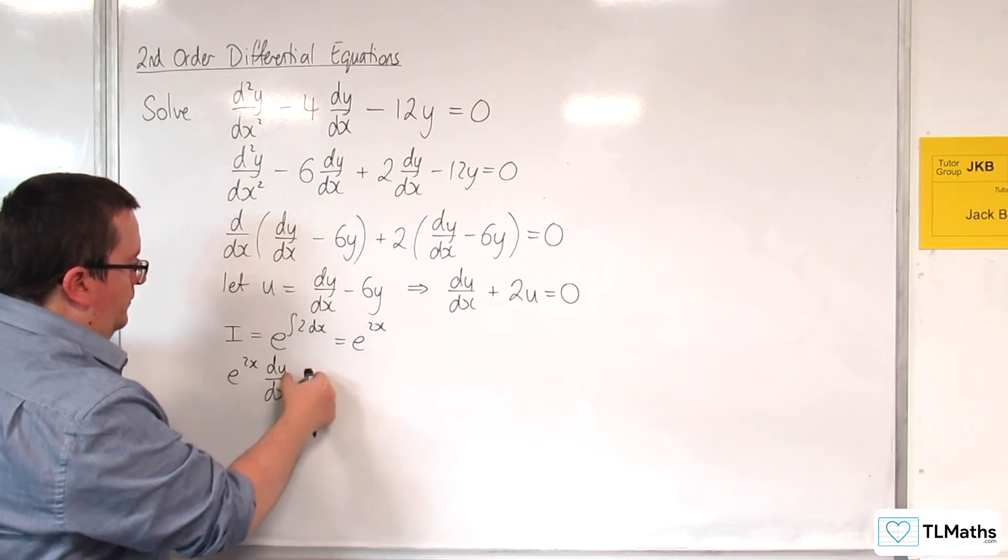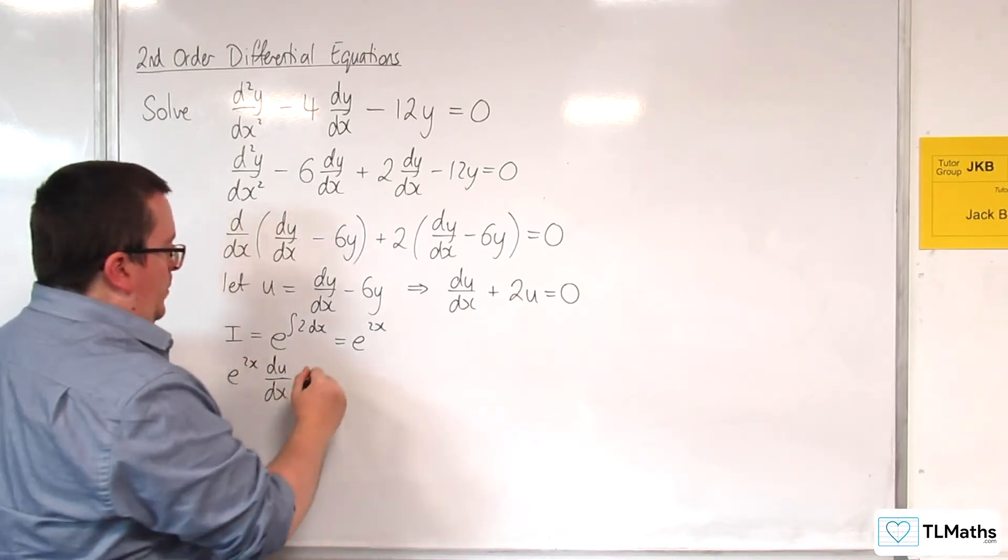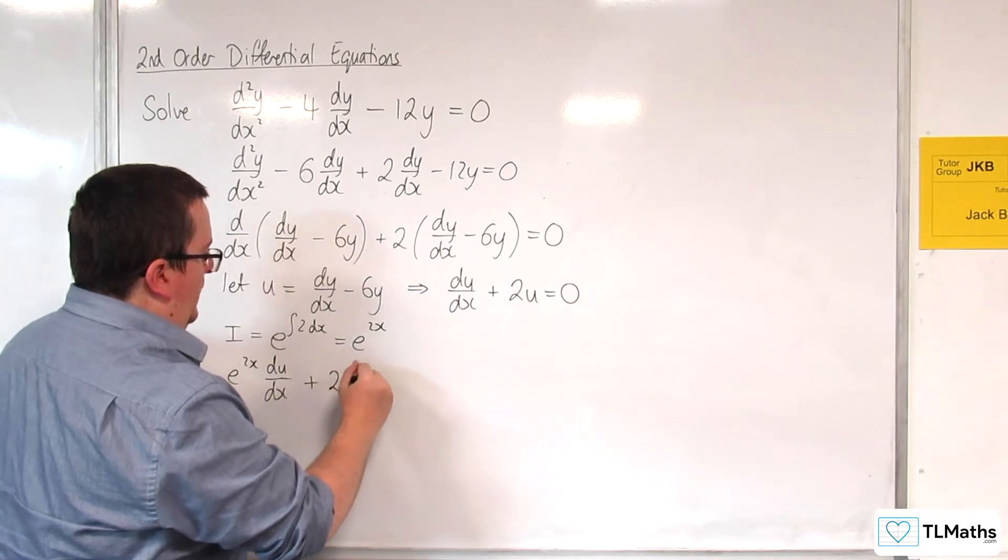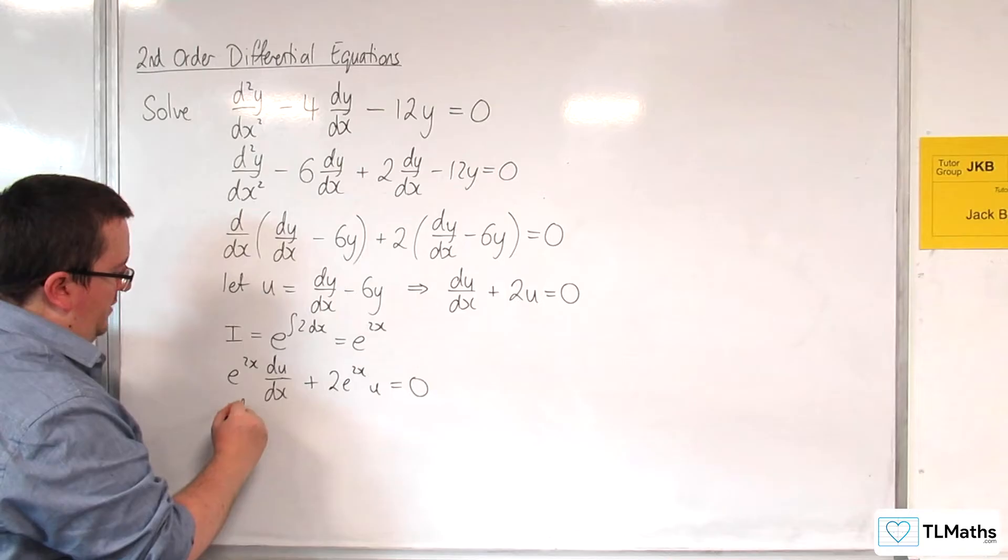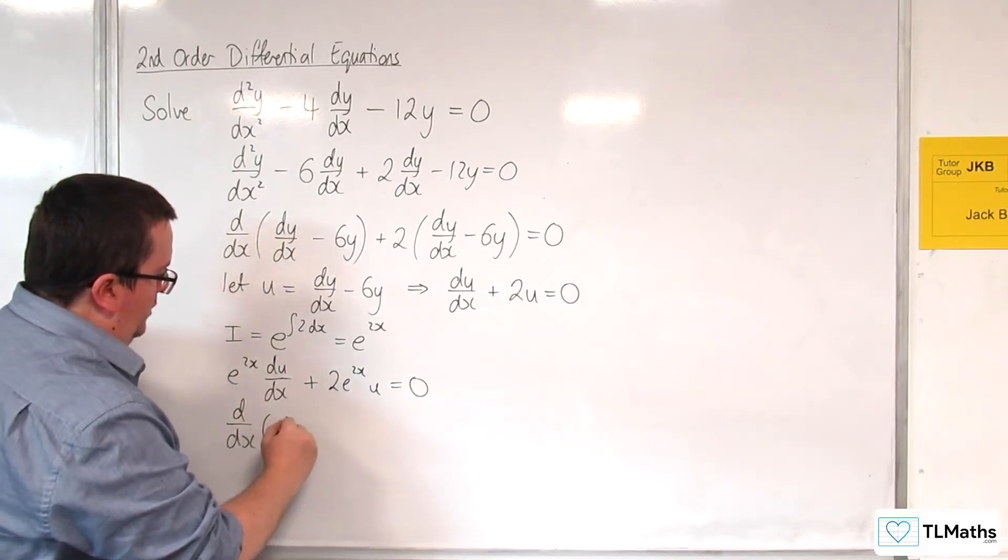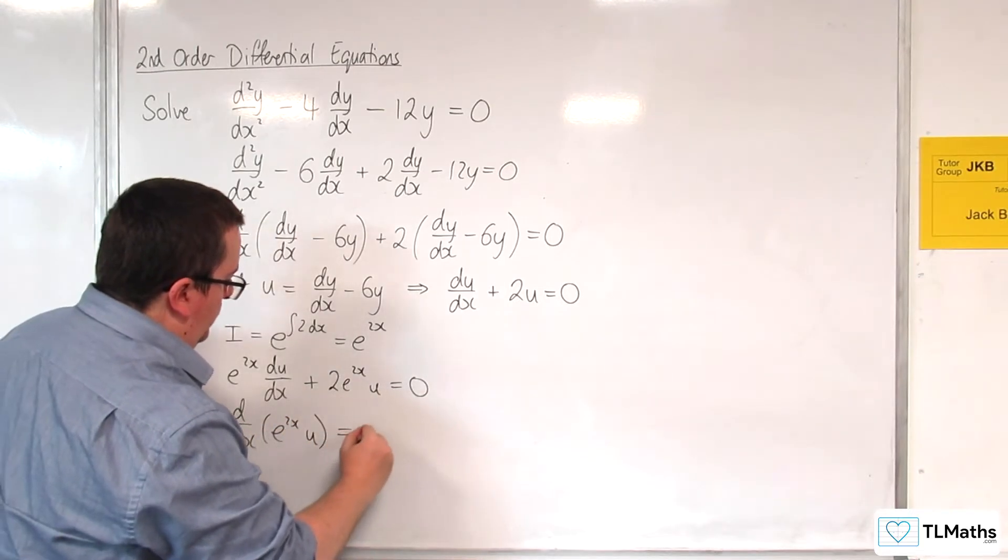So multiply through by e^(2x), I'll get e^(2x)du/dx + 2e^(2x)u = 0. So the left-hand side is the perfect derivative, d/dx of e^(2x)u = 0.